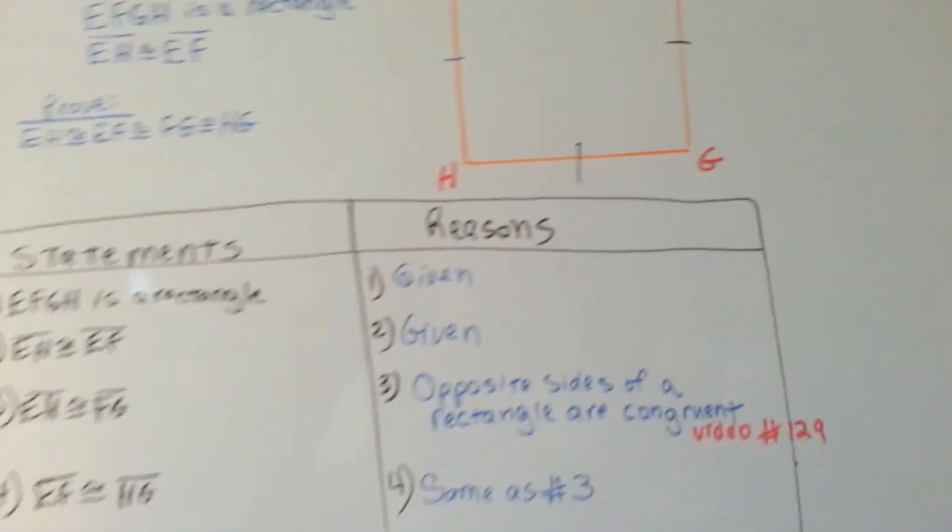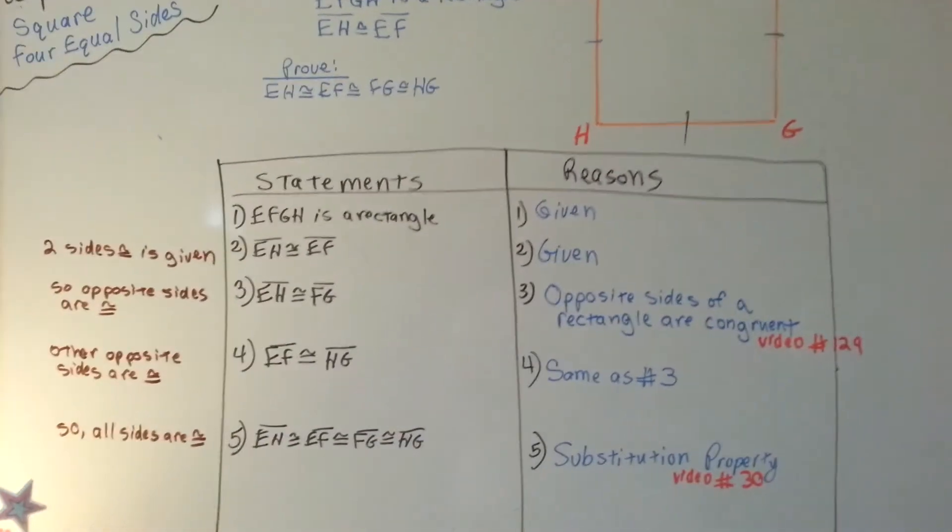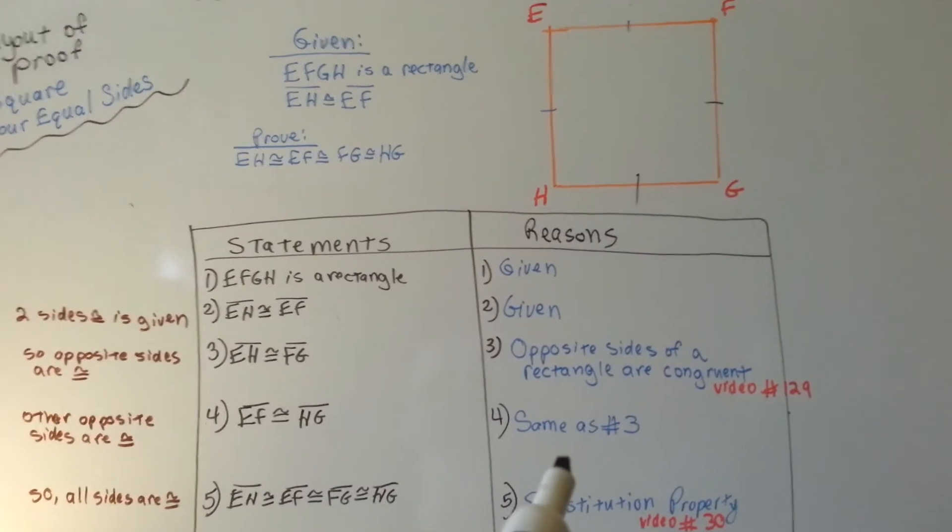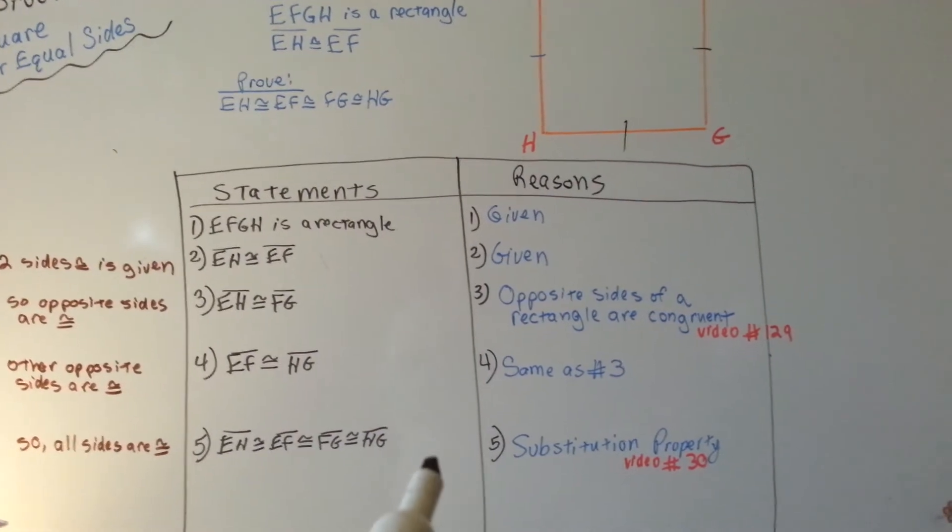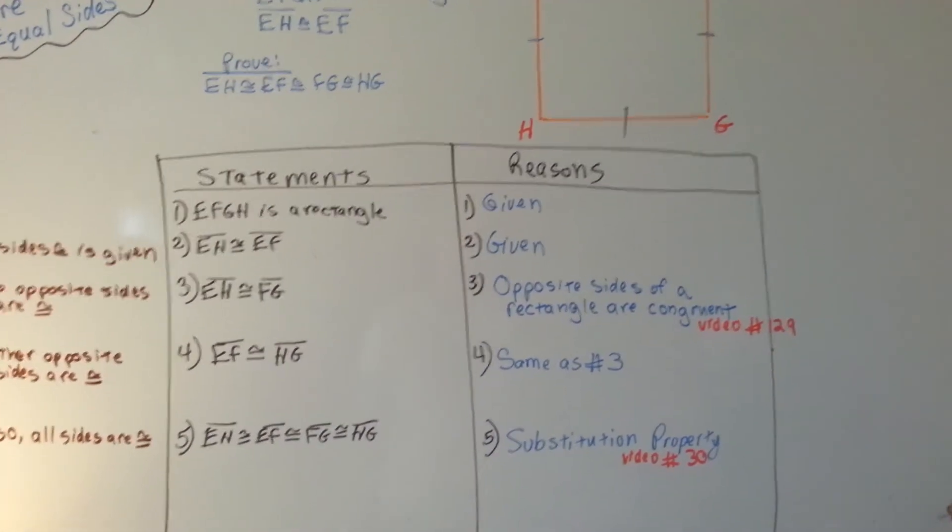Look at that. This was kind of easy, wasn't it? This was an easy proof. So, because opposite sides are congruent, we can say now all the sides are congruent, and our reasoning is the substitution property.